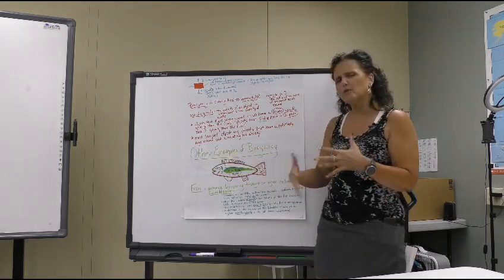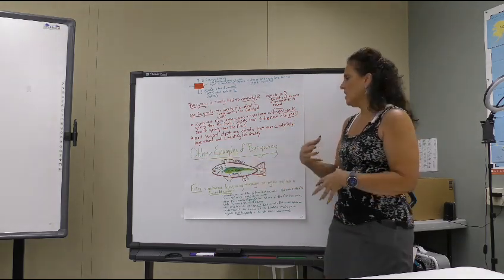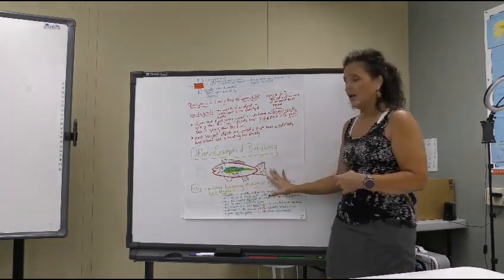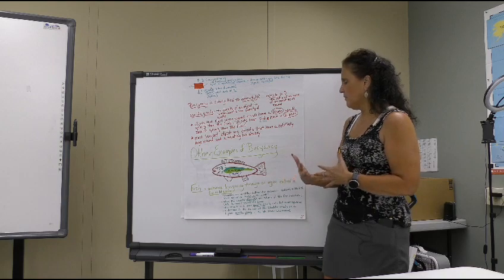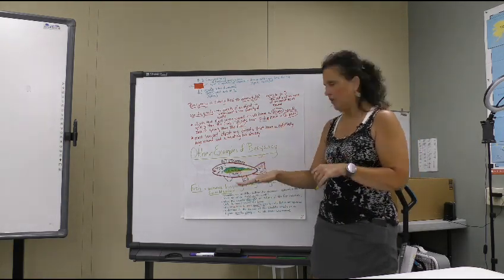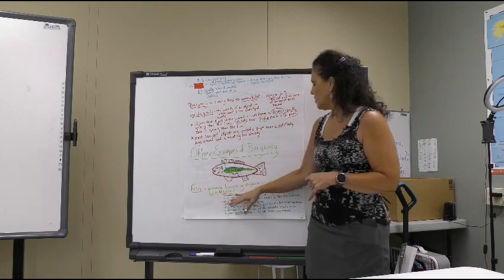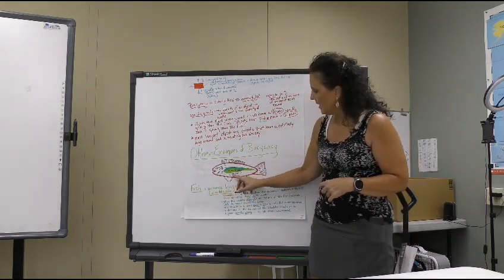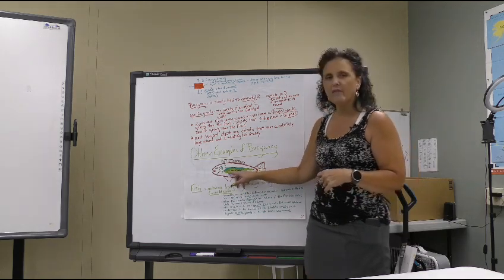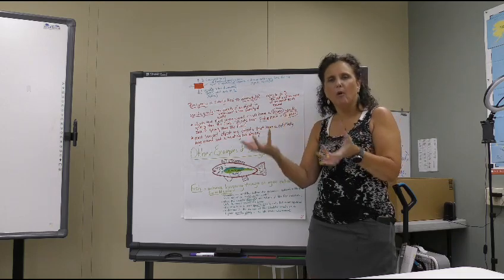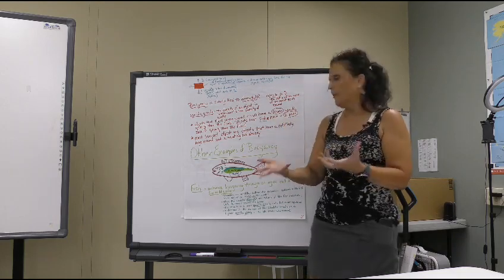So there are other examples of buoyancy that we can think about. Kind of real life examples. This is my diagram of a fish. And a fish also has the buoyant force. This will be if you cut it in half and you're looking into it. They can achieve buoyancy through an organ called a swim bladder. So here's their kidney and their stomach. And right above, in between those two, they have a swim bladder. And bladder holds water. You have an air bladder, a water bladder, kind of like a hot water bottle.